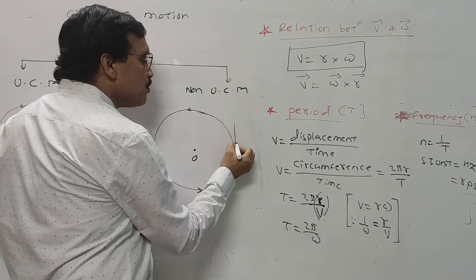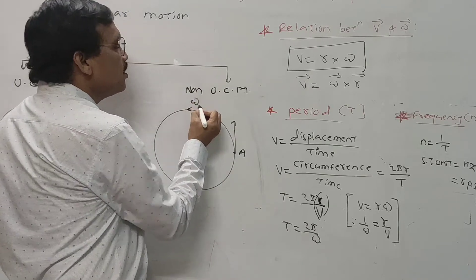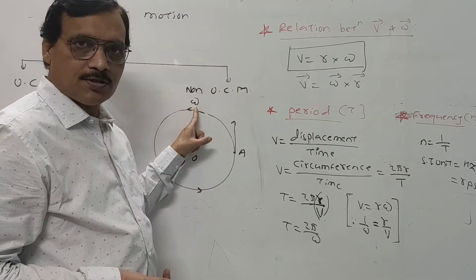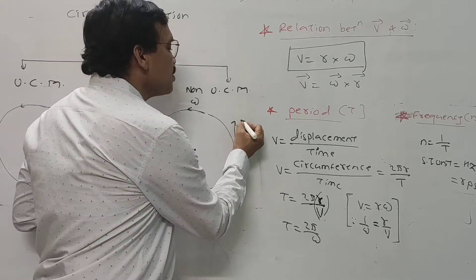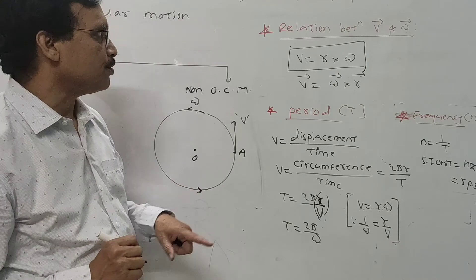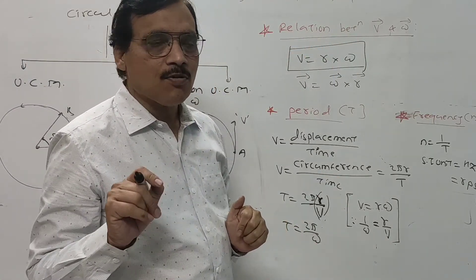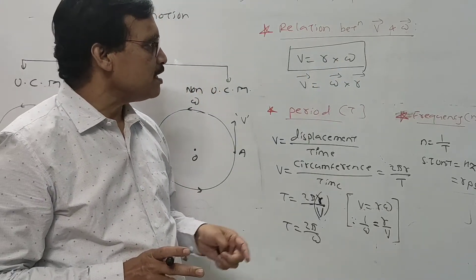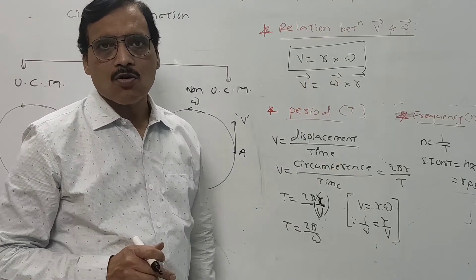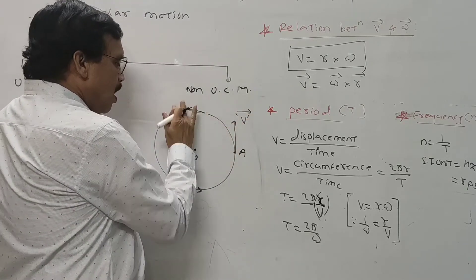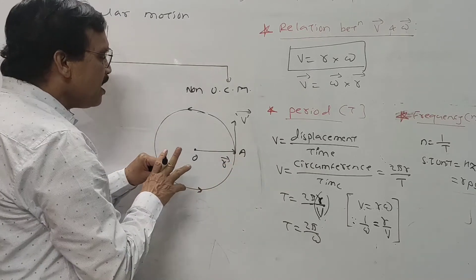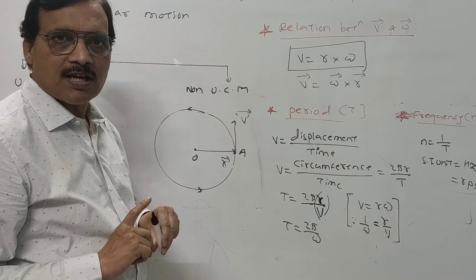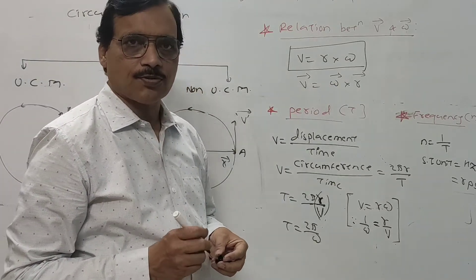Now we see the relation between linear velocity V and angular velocity omega. The relation is V equals R into omega. In vector form, this relation is V equals omega cross R. Here R is the radius of circular motion and omega is the angular velocity.